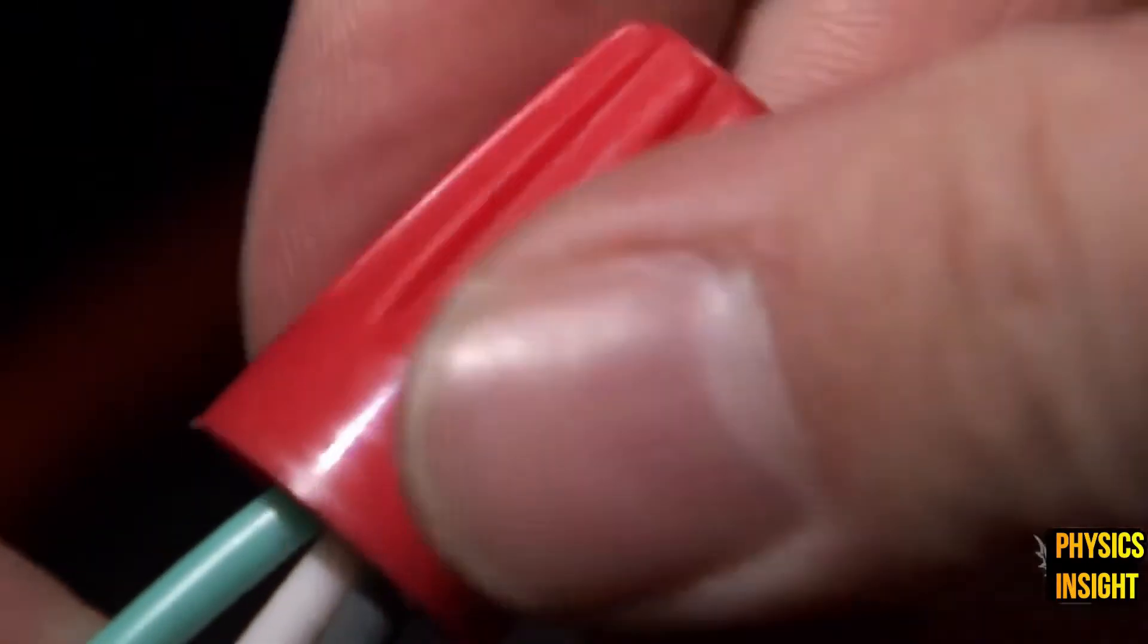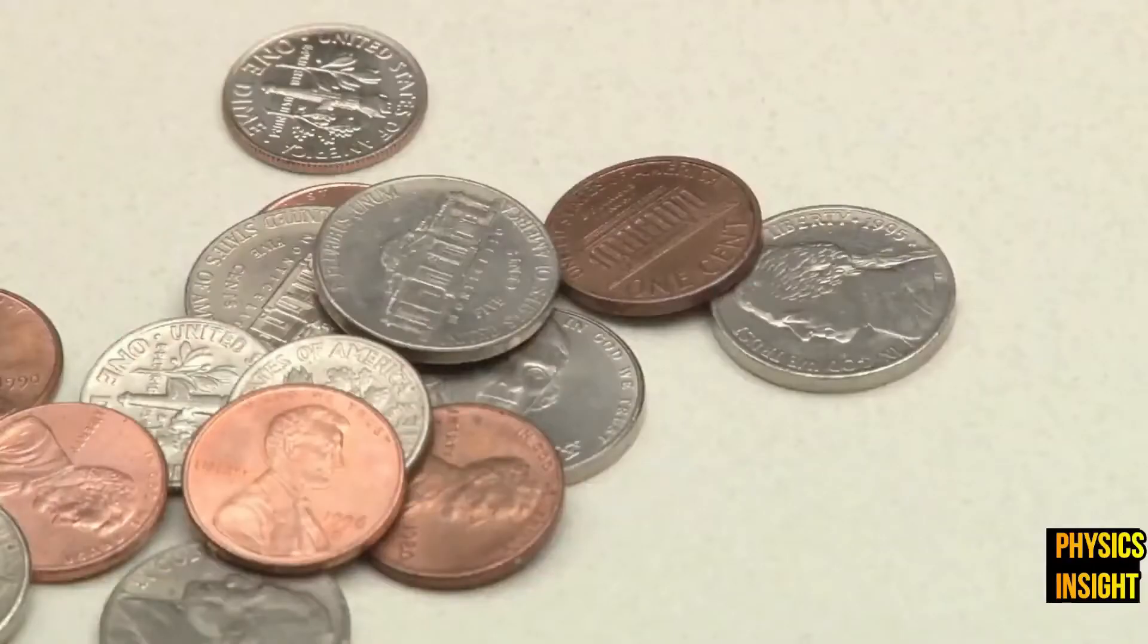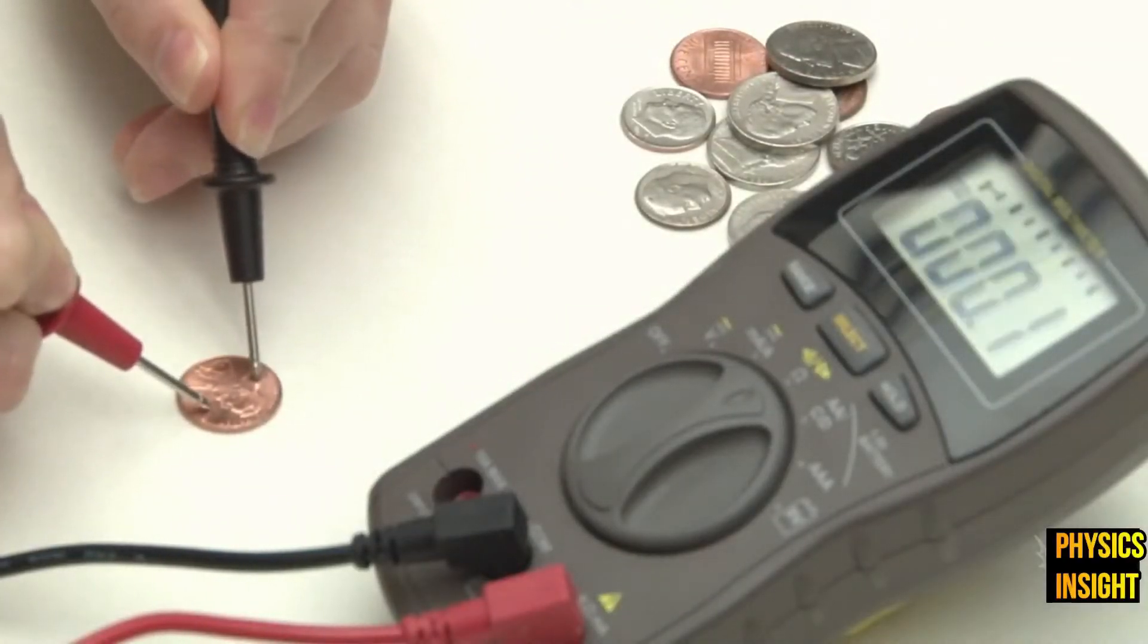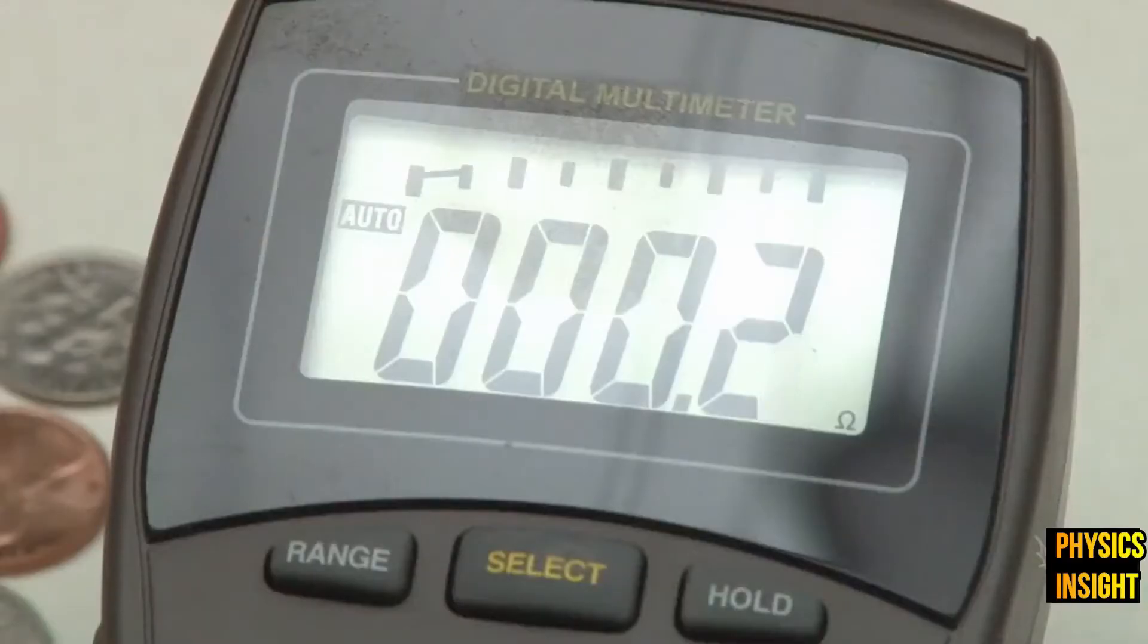But all conductors, even good ones like copper, offer some form of resistance. There may be just a little resistance, but it's always there.